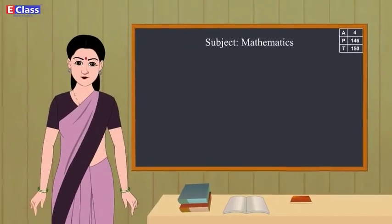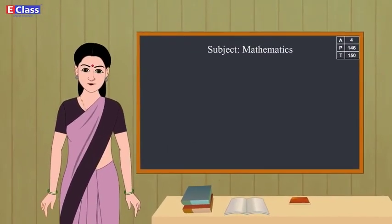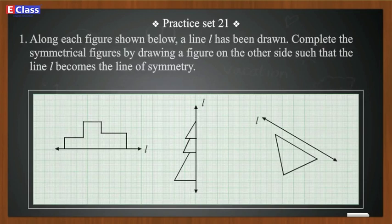Now friends, let's solve the Practice Set 21. Along each figure shown below, a line l has been drawn. Complete the symmetrical figures by drawing a figure on the other side such that the line l becomes the line of symmetry.